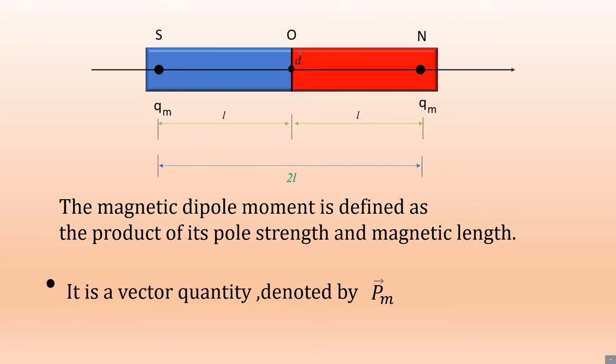The magnetic dipole moment is defined as the product of its pole strength and magnetic length. The pole strength is Qm and the magnetic length is 2l, so the product gives the magnetic dipole moment. It is a vector quantity.